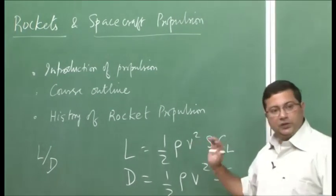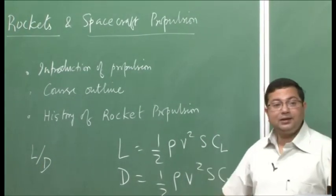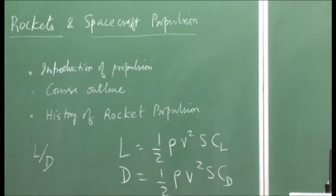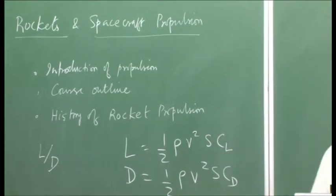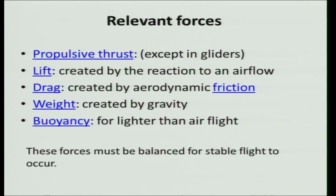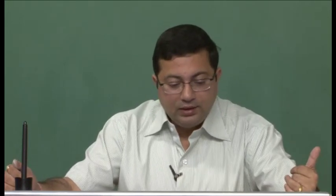Coming back to this course, here we are primarily generating high velocity using propulsive thrust. Propulsive thrust is a force created that will propel the vehicle at high speed. The other forces acting on the vehicle are lift, drag, the weight of the vehicle acting downward, and for lighter-than-air flights, buoyancy acting upward. These forces must be balanced in order to get a stable flight. Thrust, lift, drag, weight — all must be balanced, and the free body diagram of a vehicle shows lift acting upward, weight acting downward, drag opposing the flight direction, and thrust acting forward.